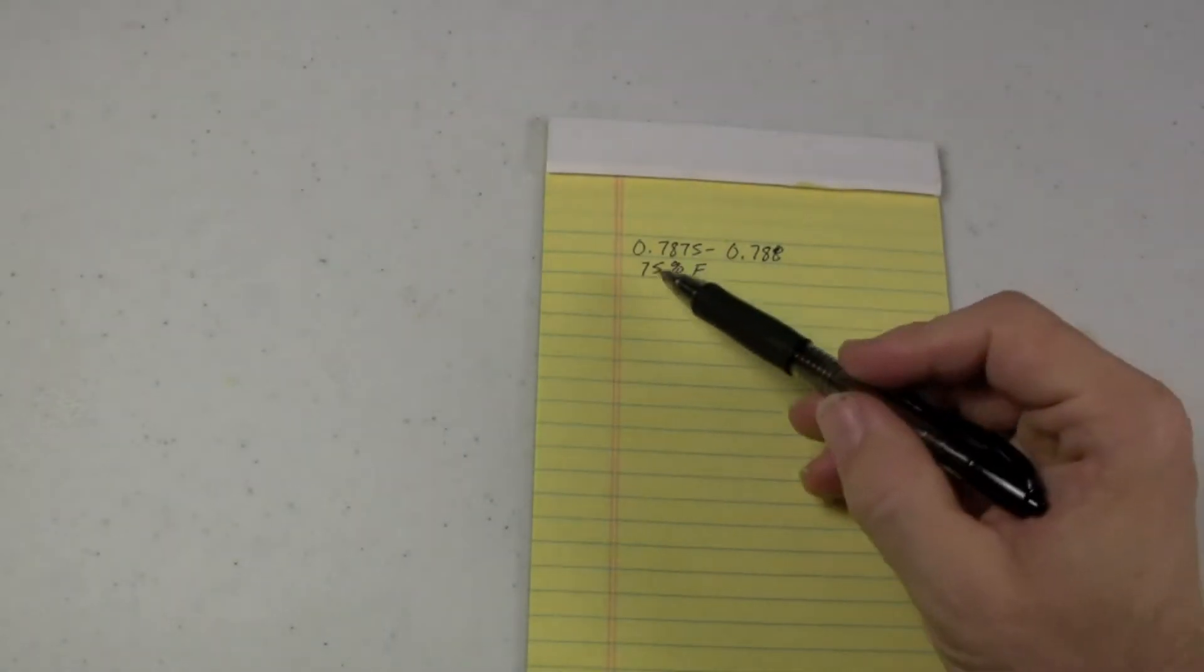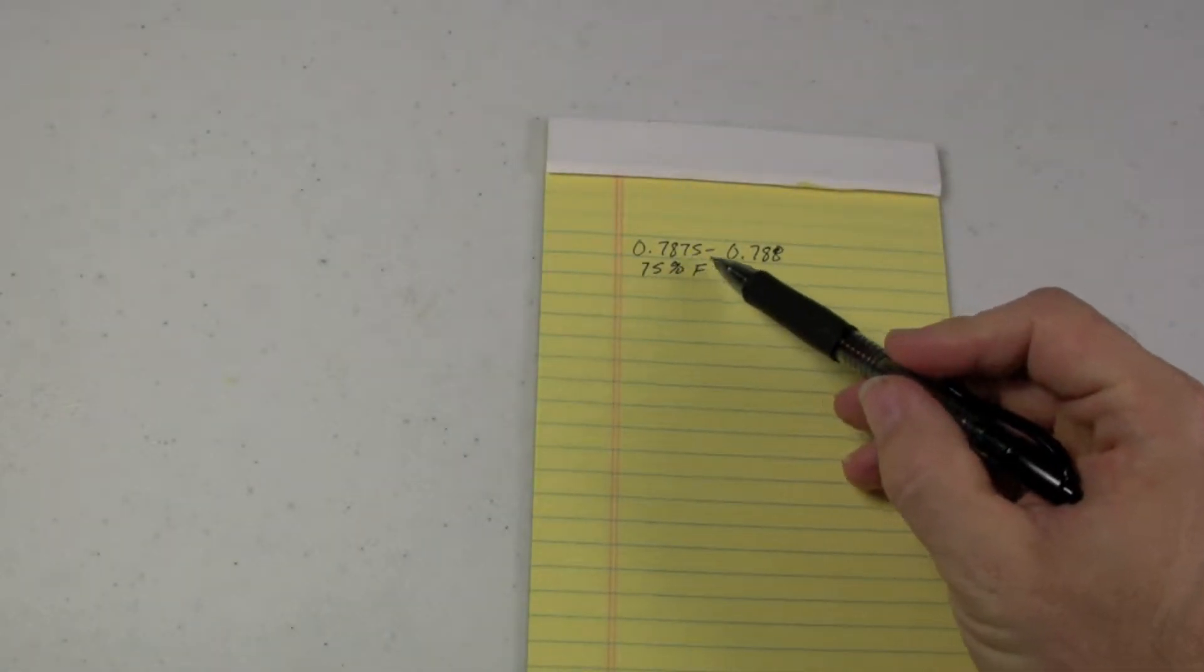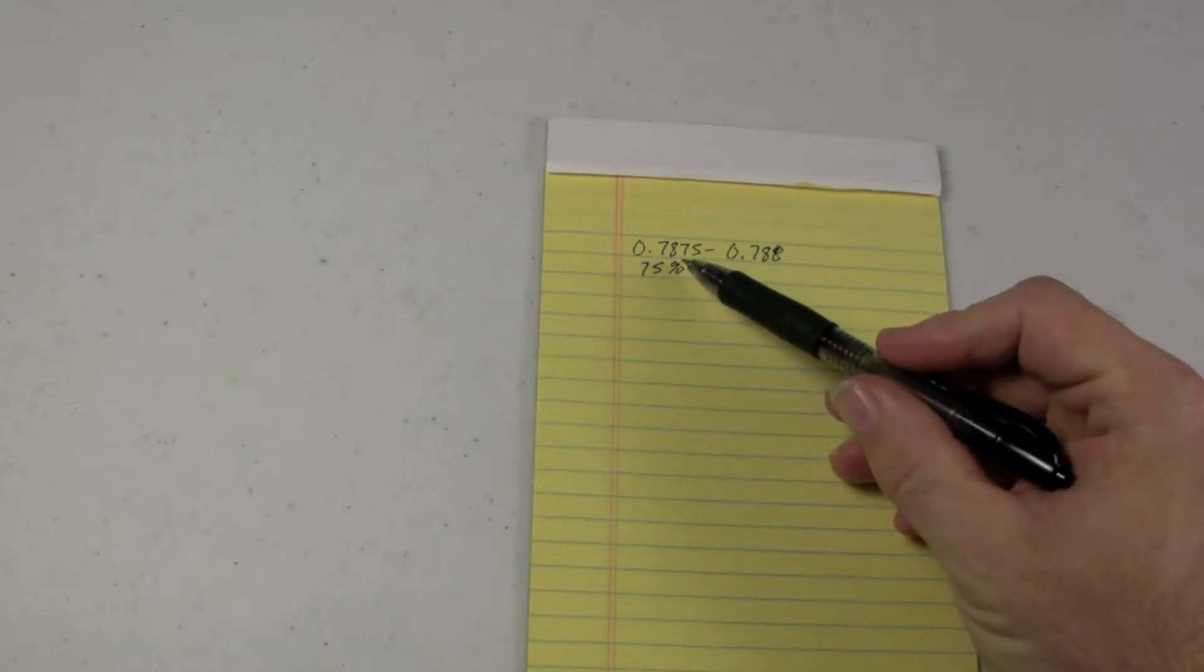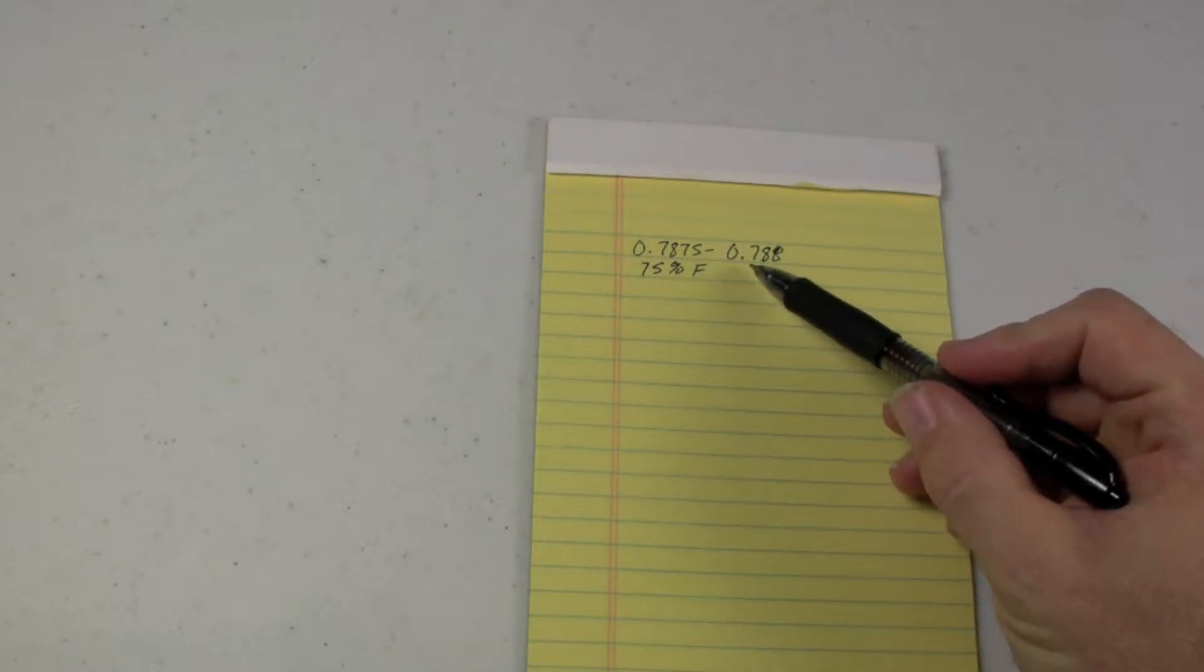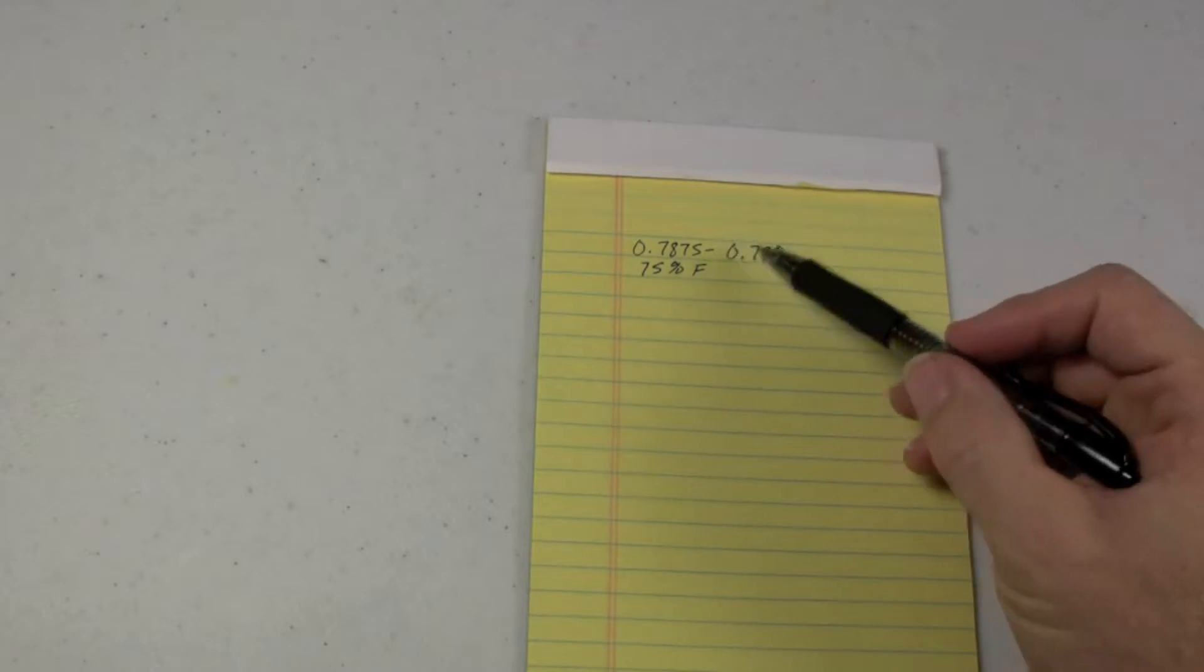When we took our reading, it was 75 degrees Fahrenheit. And the reading on the hydrometer was .7875 to .788. Somewhere in that range.